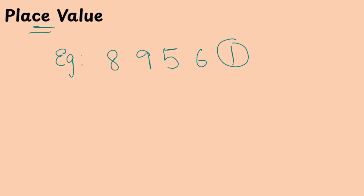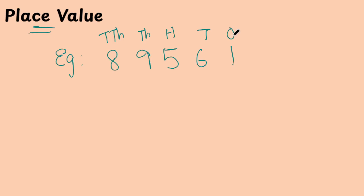So what's the place of each digit? Starting from the last digit: 1's, then 10's, then 100, then 1000, then 10,000. This is how the places will be written in the number. This is the first step.